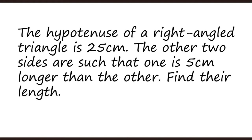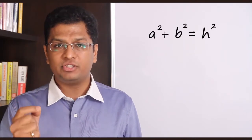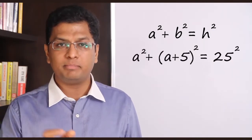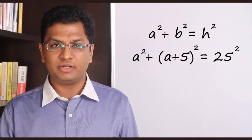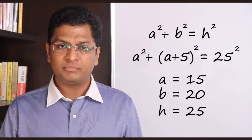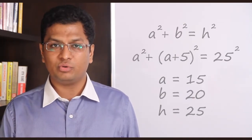Problem: The hypotenuse of a right-angle triangle is 25 cm. One side is 5 cm longer than the other. Find their lengths. Using a² + (a+5)² = 25², solving gives the sides as 15 cm and 20 cm. This can also be identified from the 3-4-5 triplet scaled to 15-20-25.